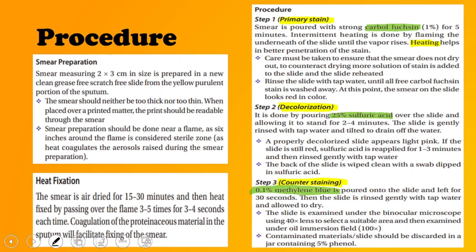Regarding duration: carbol fuchsin is applied for nearly five minutes with intermittent heating. During heating, the slide may start drying, so more solution can be added to prevent drying. For decolorization, 25% sulfuric acid is applied and allowed to stay for two to four minutes. The counter stain, 0.1% methylene blue, is left on the slide for nearly 30 seconds, after which the slide is rinsed.